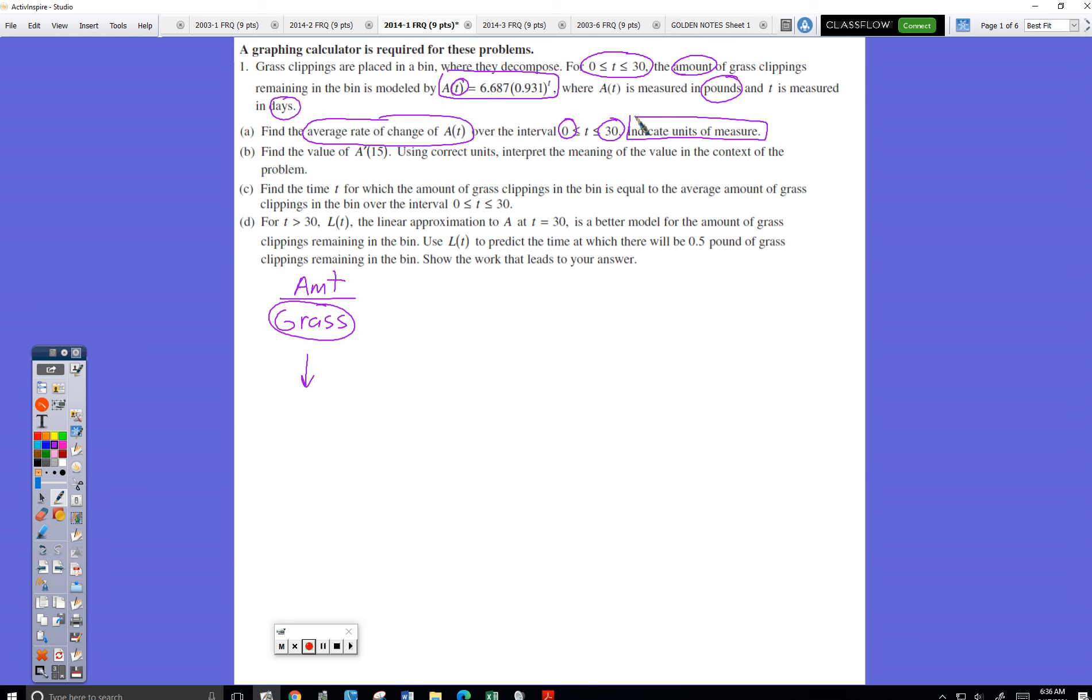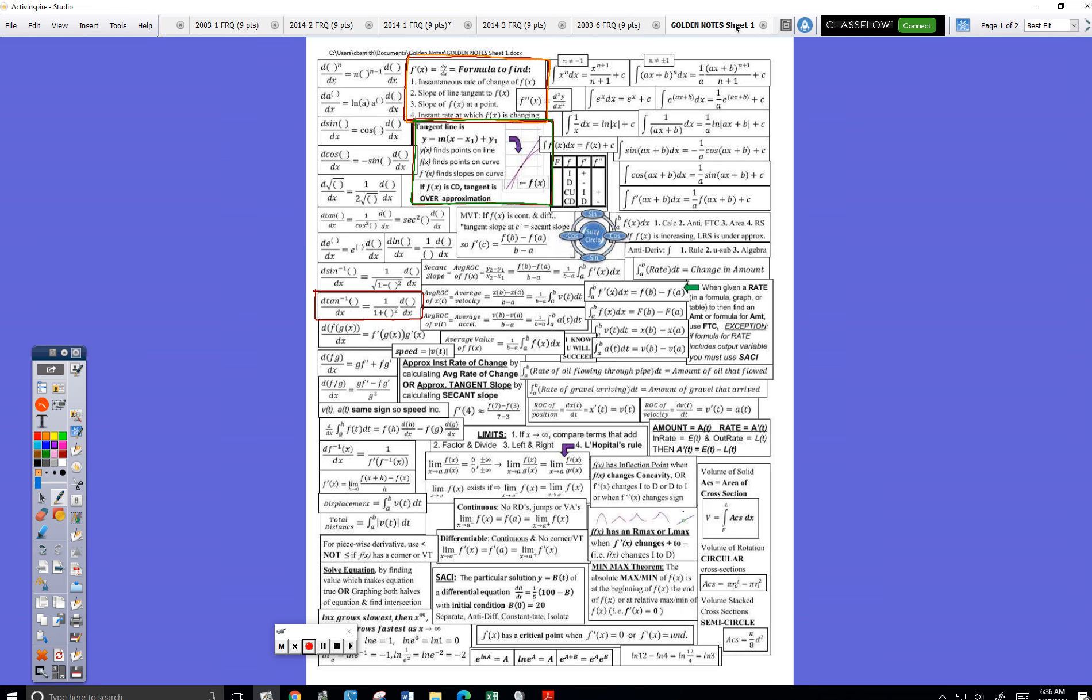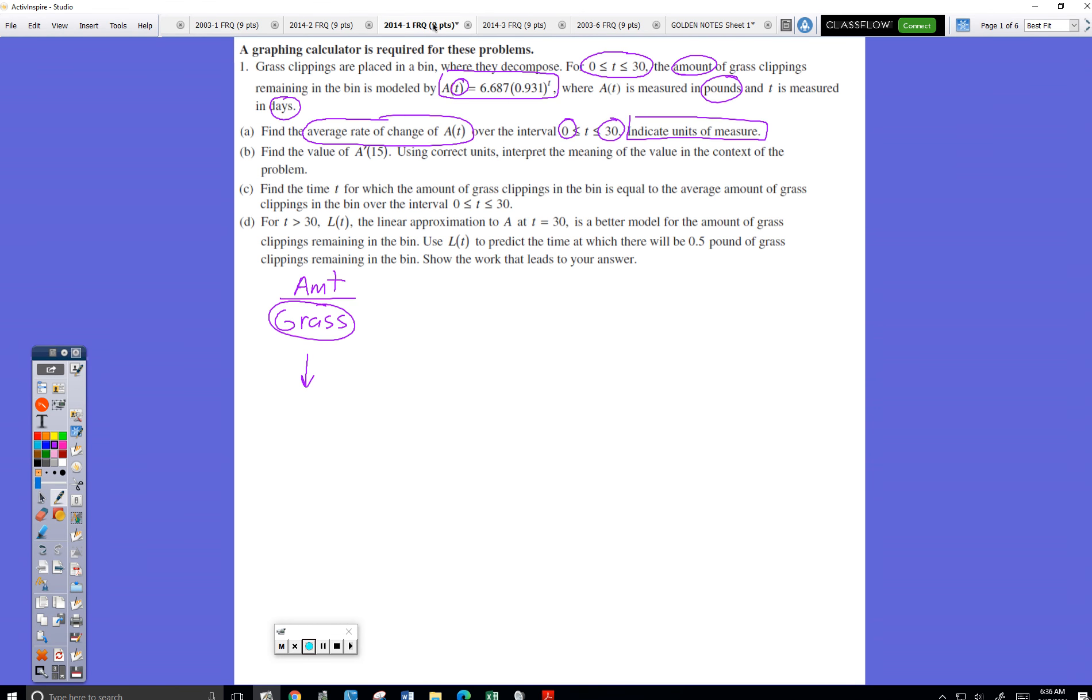So remembering my golden notes, average rate of change is right here. Simply determining on average how fast something is changing. So I go back to the problem. And that's what I do.